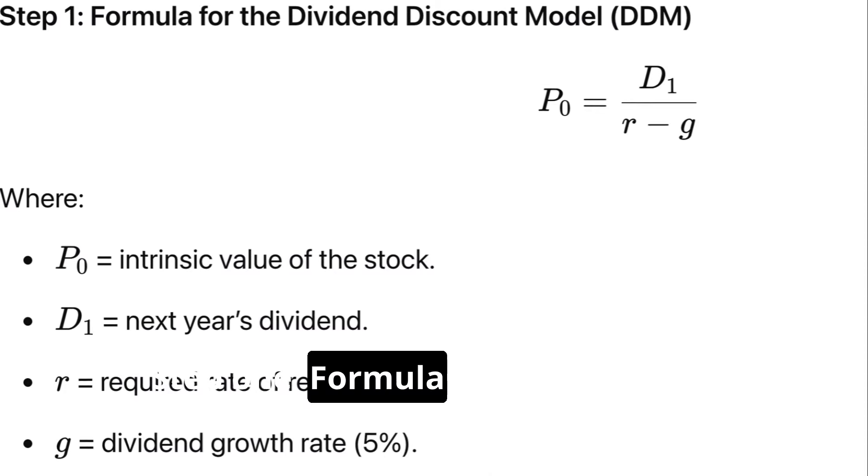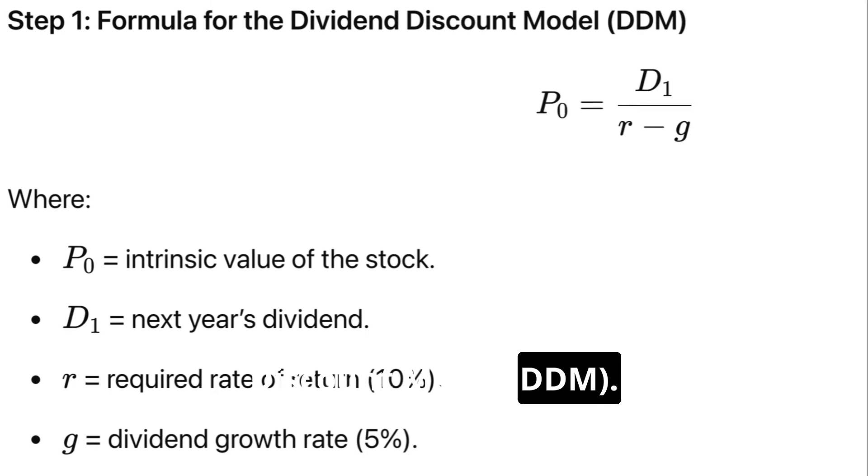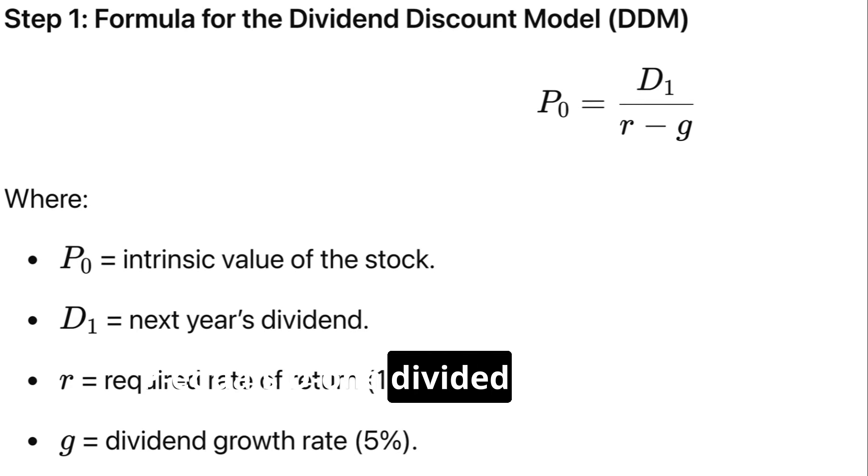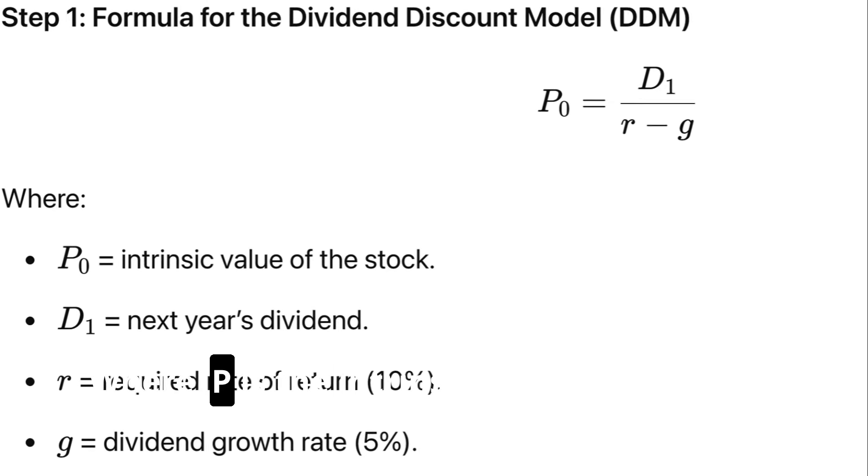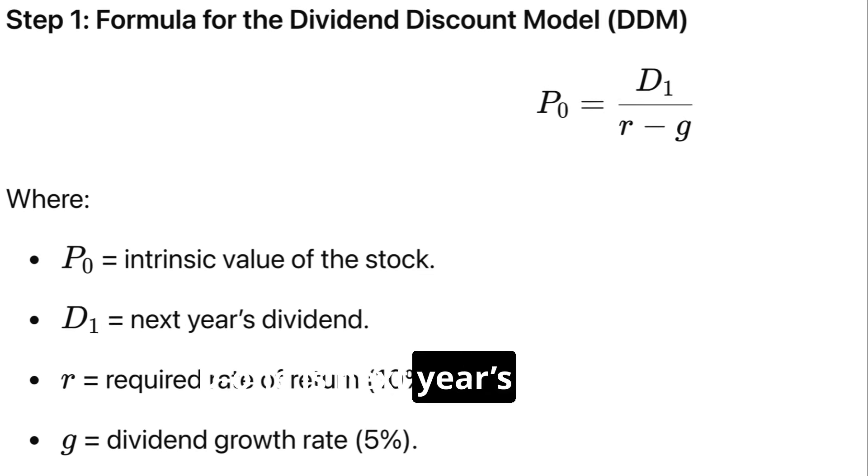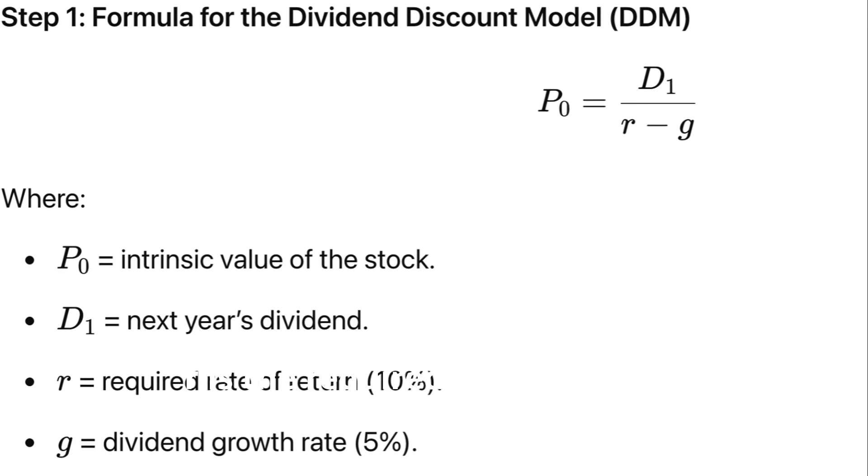Step 1: Formula for the Dividend Discount Model. P₀ = D₁ / (r - g), where P₀ is the intrinsic value of the stock, D₁ is next year's dividend, r is the required rate of return (10%), and g is the dividend growth rate (5%).